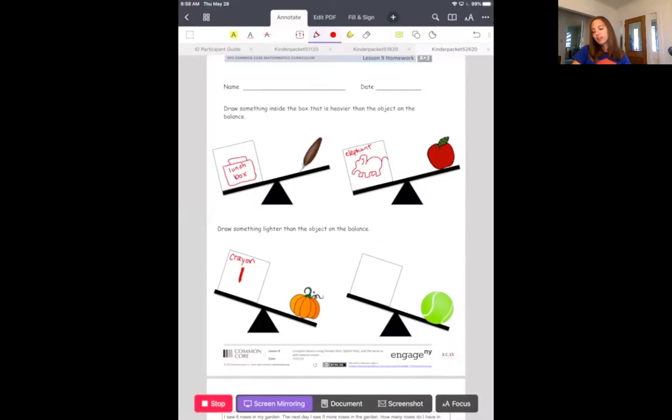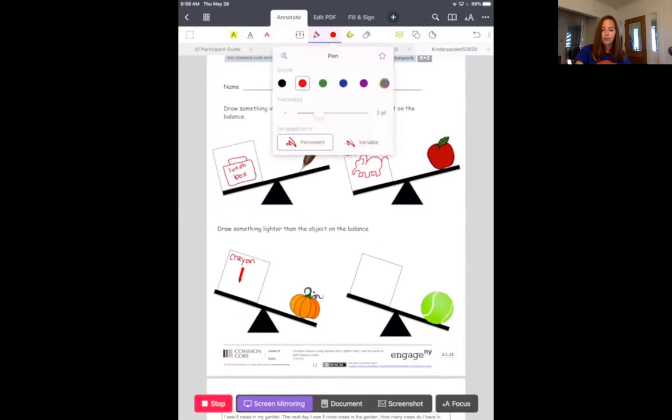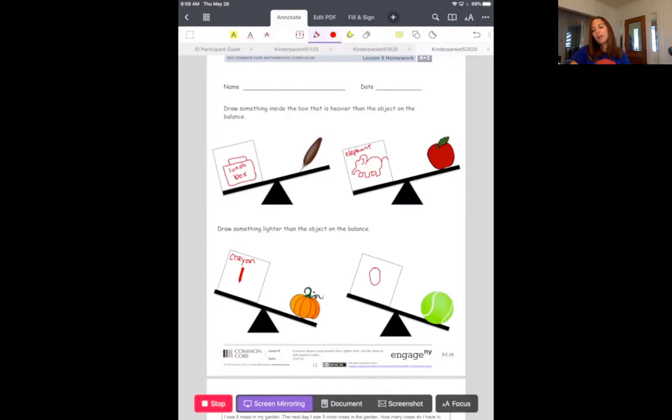And one more. What's something lighter than a tennis ball? Lighter than a tennis ball. So if we had a scale, you wouldn't want to tip it so that it goes down. You want to keep it up. Lighter than a tennis ball. I'm going to draw a rubber band. A rubber band would be much lighter than a tennis ball. I'm going to label it. Rubber band. And that's it. That's all you have to do today.